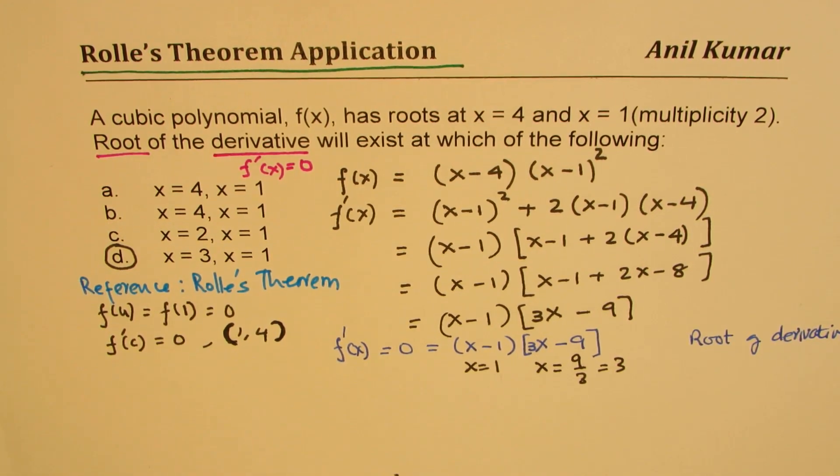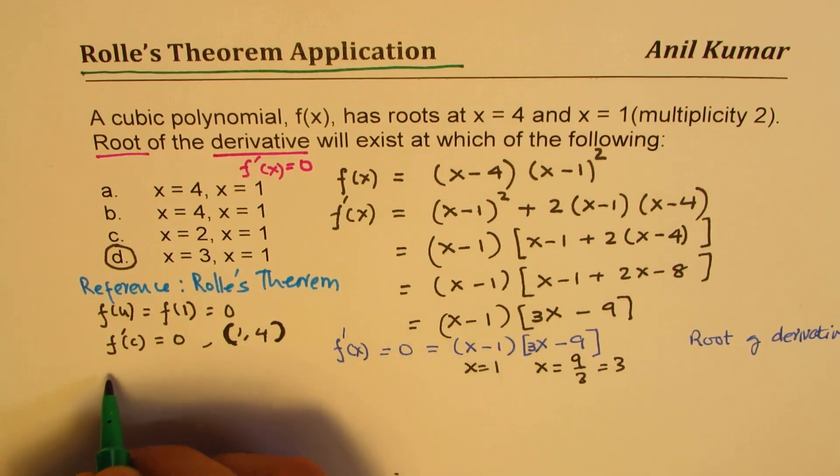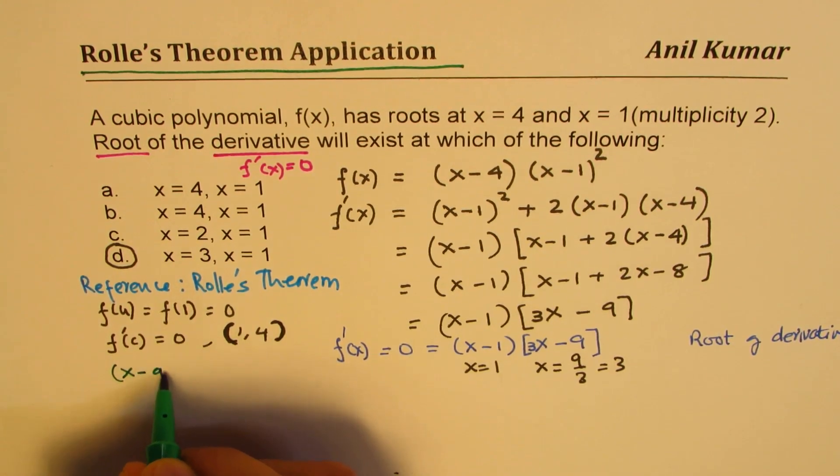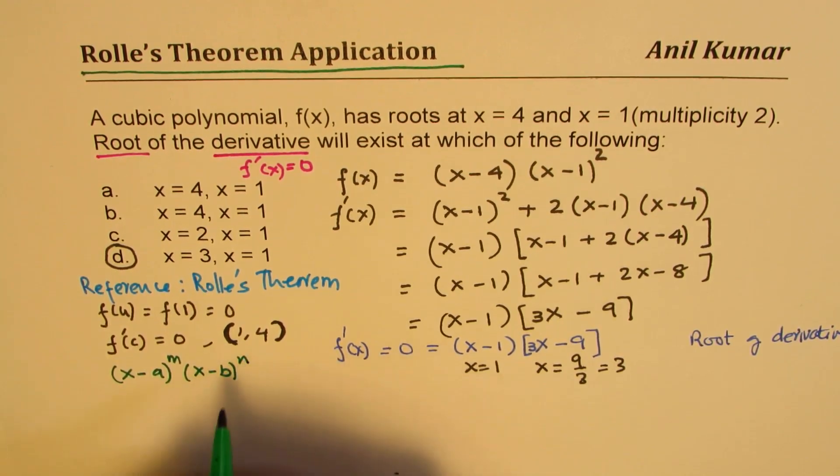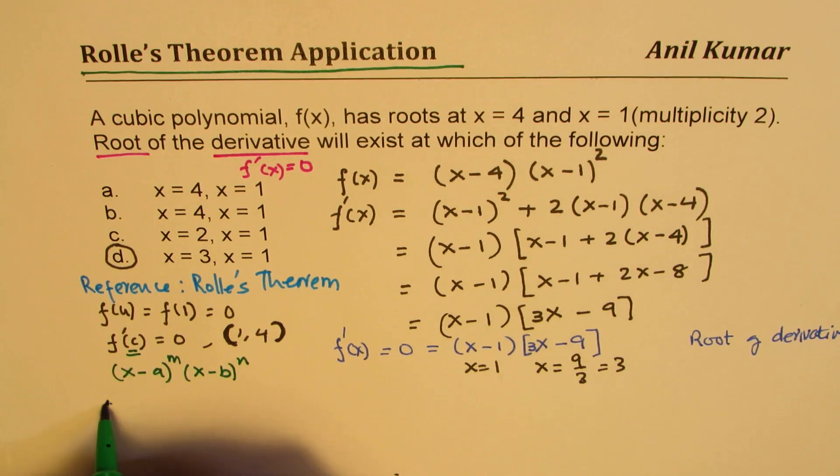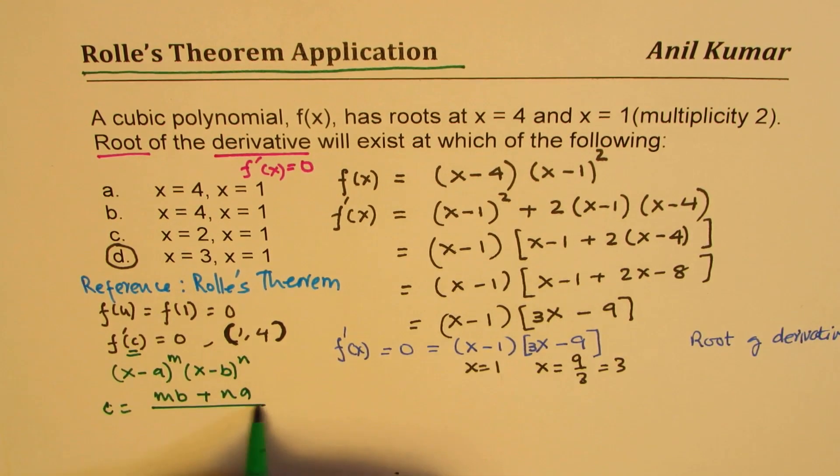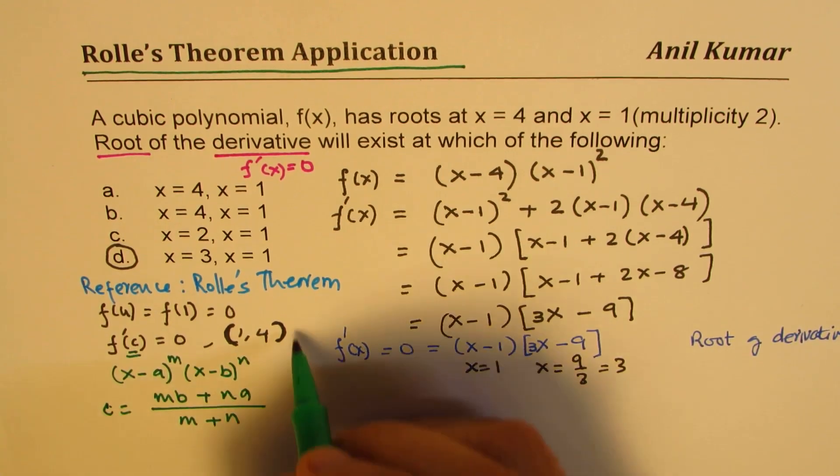And in one of our formulas, if we have a value like (x-a)^m times (x-b)^n, then that value of c for which it is 0 is basically equal to m times b plus n times a divided by m plus n, right? So that is the answer.